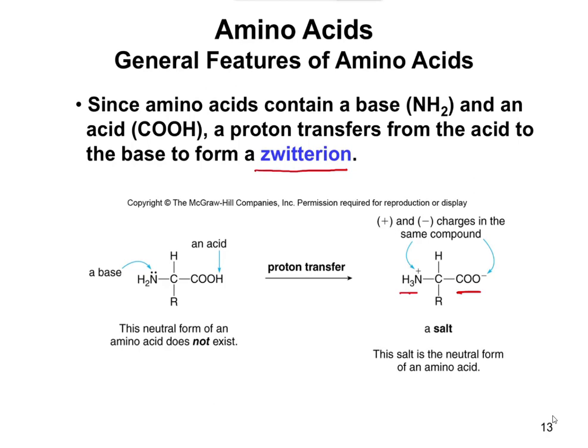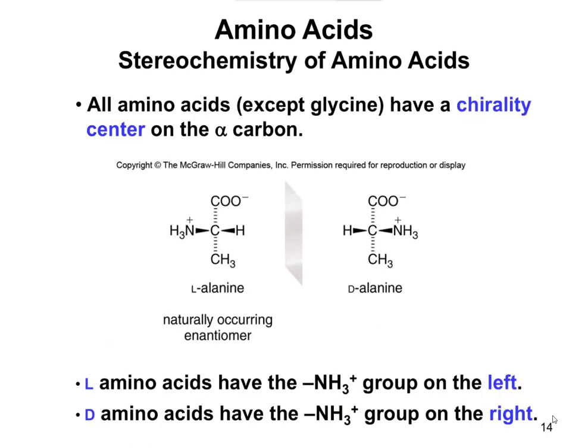The book says this neutral form of an amino acid does not exist. That might be a bit of a stretch — it exists in very small quantities, but it usually does exist a little bit. Suffice it to say, the zwitterion form, the salt form, is the one you should be most familiar with.